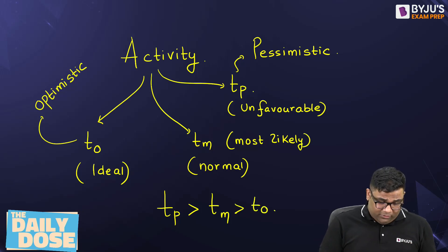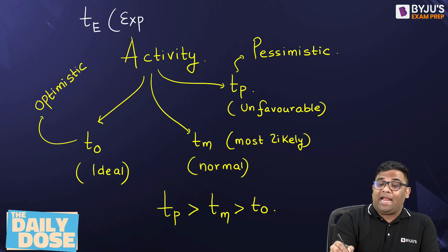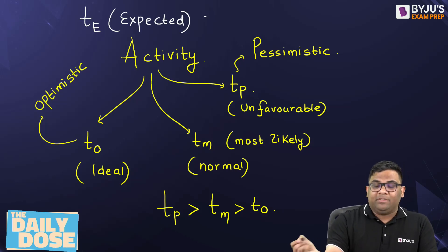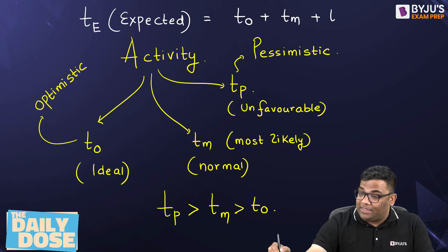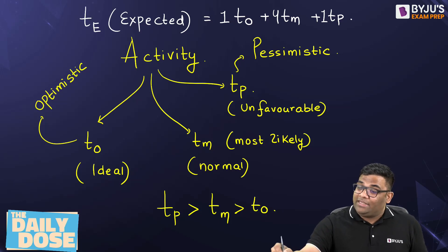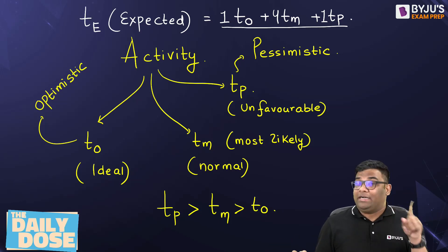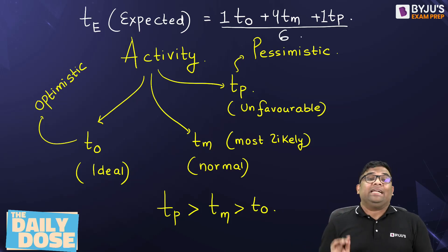Now, if I want to find out the expected time Te, the expected time of the activity will be an average. I will take T0, Tm, and Tp, but I will give different weightage. I will give one weightage to T0, one weightage to Tp, and four weightage to Tm. So total weightage is 1 plus 1 plus 4, that is 6. So Te equals T0 plus 4Tm plus Tp, divided by 6. This gives the expected time of a particular activity.